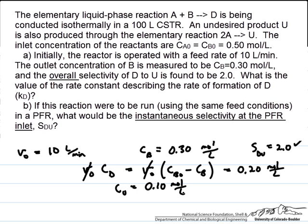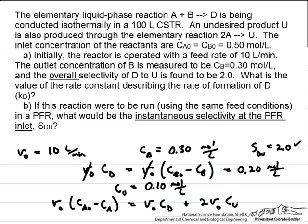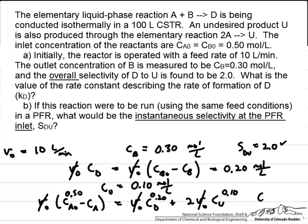Now we know the concentration of all species exiting the reactor except A. We can do a simple mole balance: the moles of A consumed equals the moles of D formed — volumetric flow rate times CD, since one mole of A reacts per mole of D — plus two times the molar flow rate of U, since two moles of A react per mole of U. Canceling the volumetric flow rate terms, with CA0 = 0.50, CD = 0.20, and CU = 0.10, we find CA = 0.10 moles per liter.